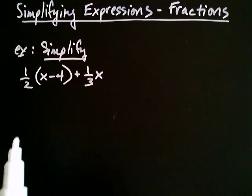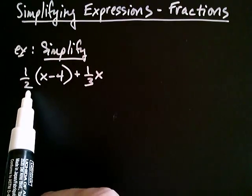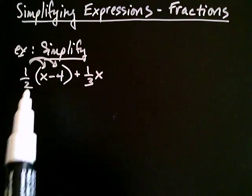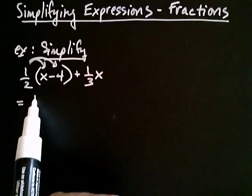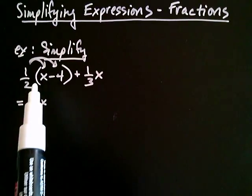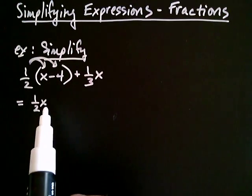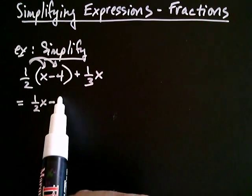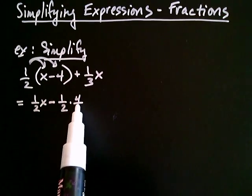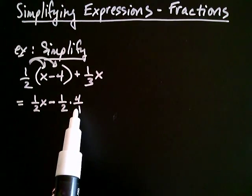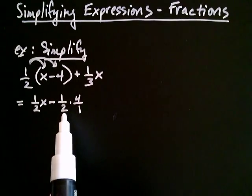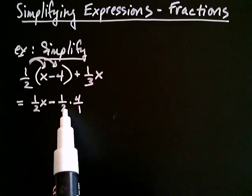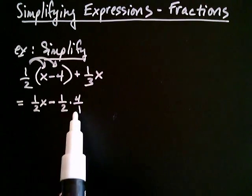What we're going to do is start off by distributing this one half. So we're going to multiply the one half by the x, and then the one half multiplied by the negative four. One half times x is just one half x. Now, a positive times a negative is going to be a negative, so I'm looking at negative whatever I get when I multiply one half and four together. Notice how I wrote the four as four over one, because whenever you multiply two fractions together, you first want to see if you can cancel either vertically or diagonally, and then multiply across after that.